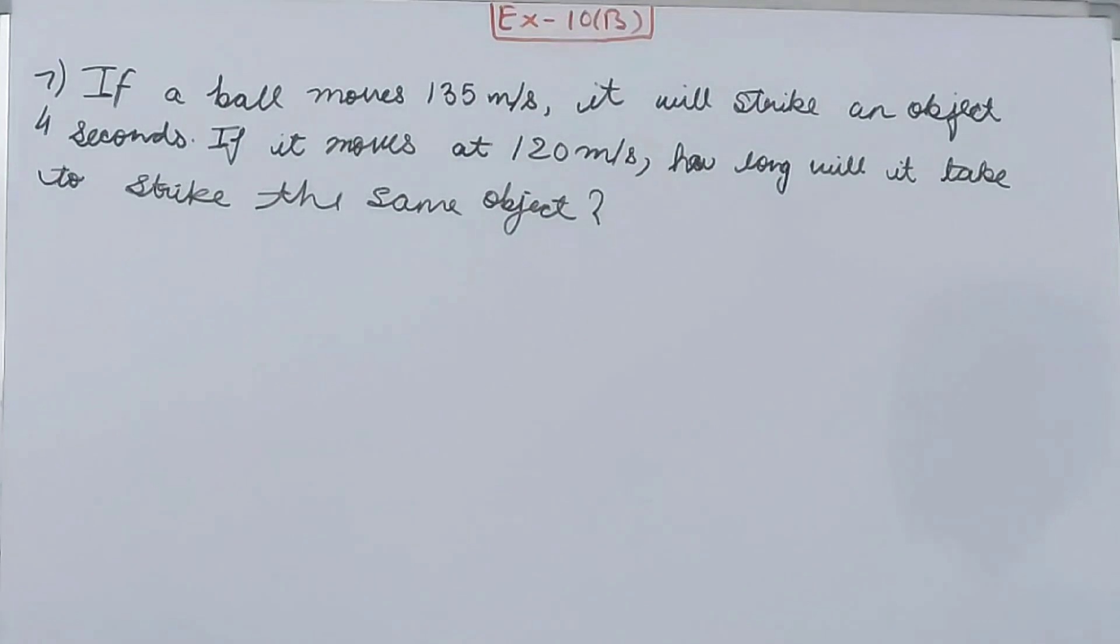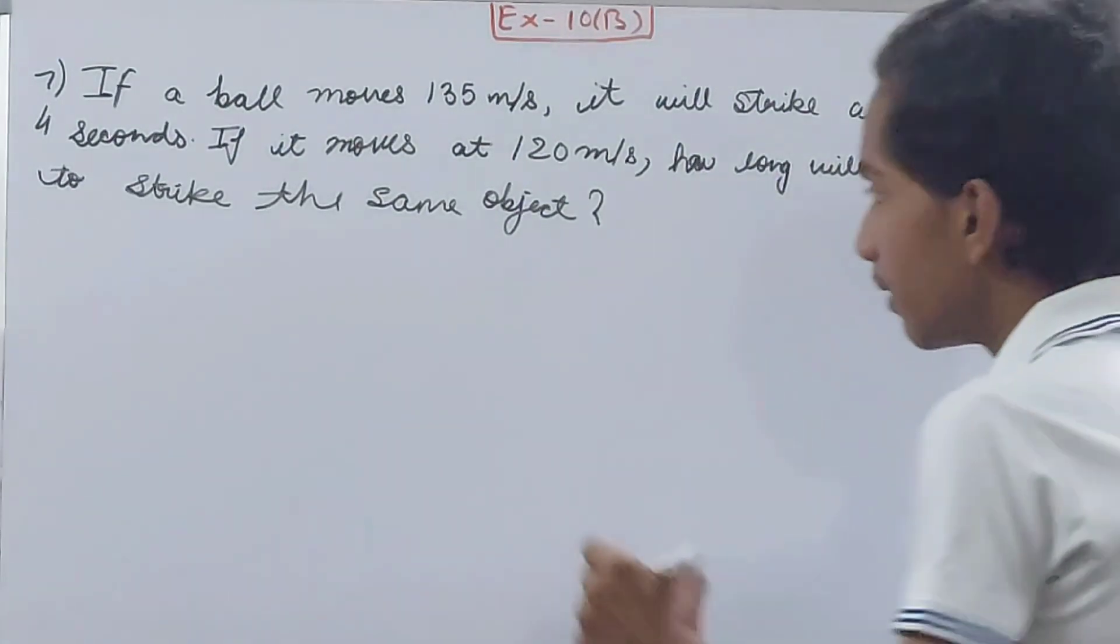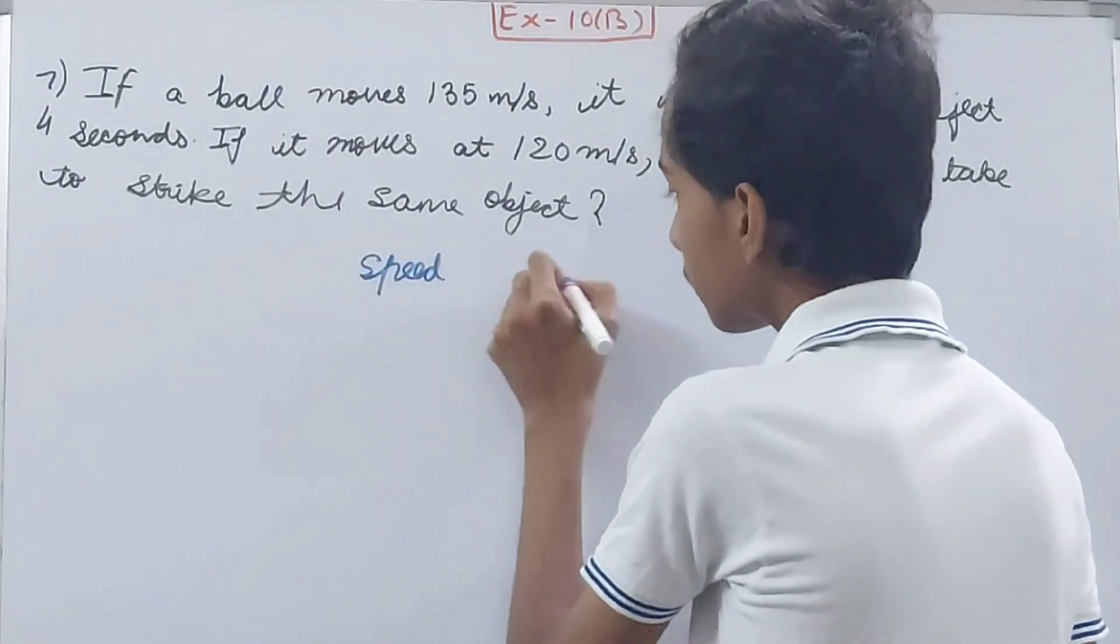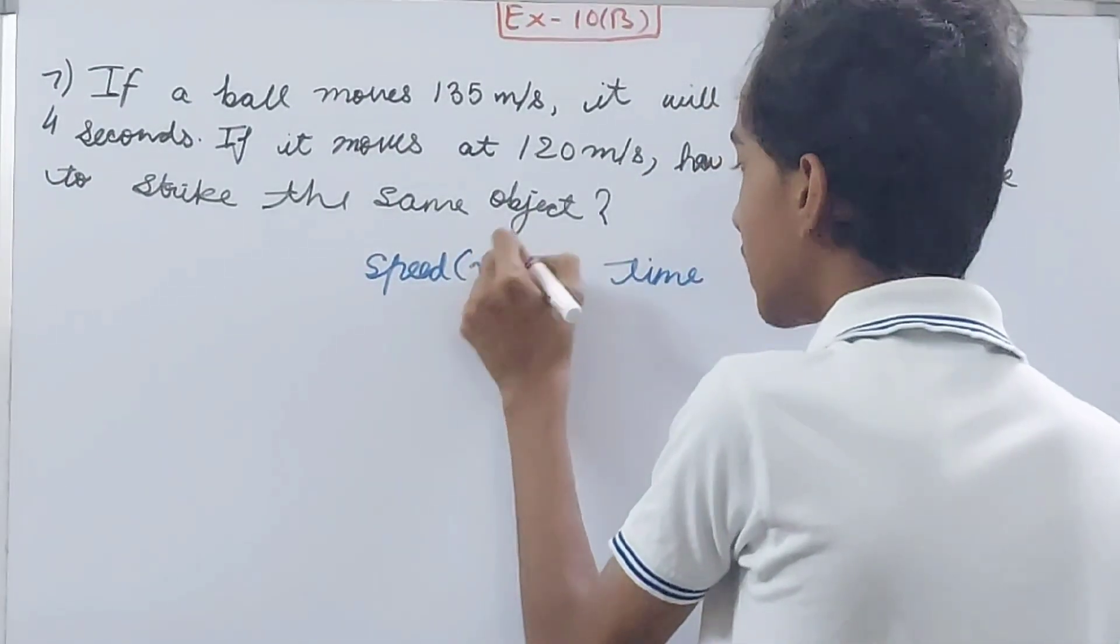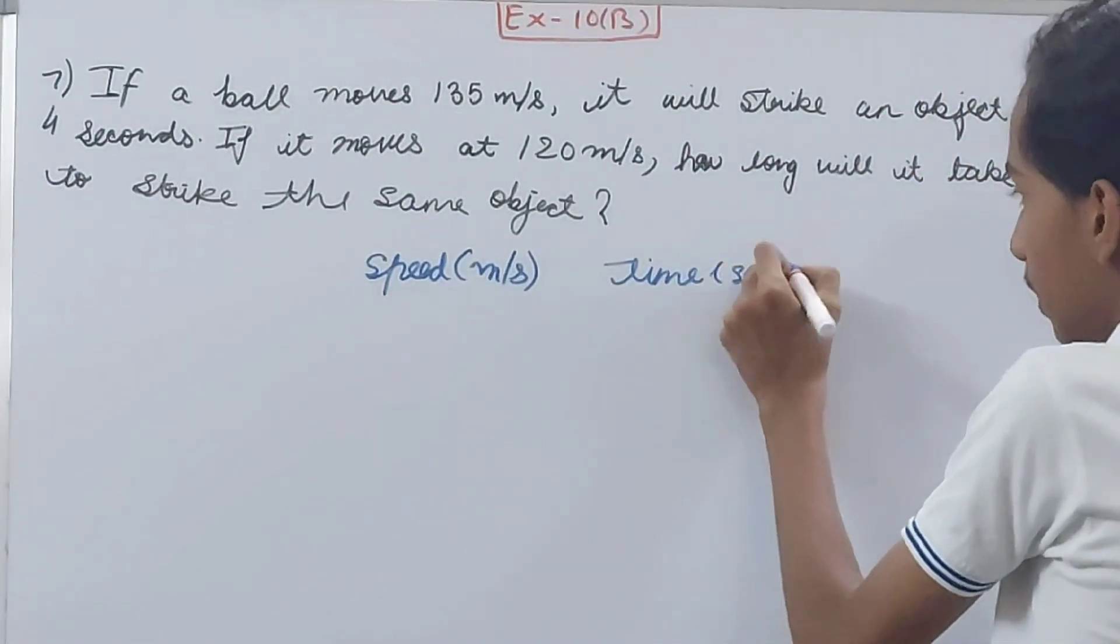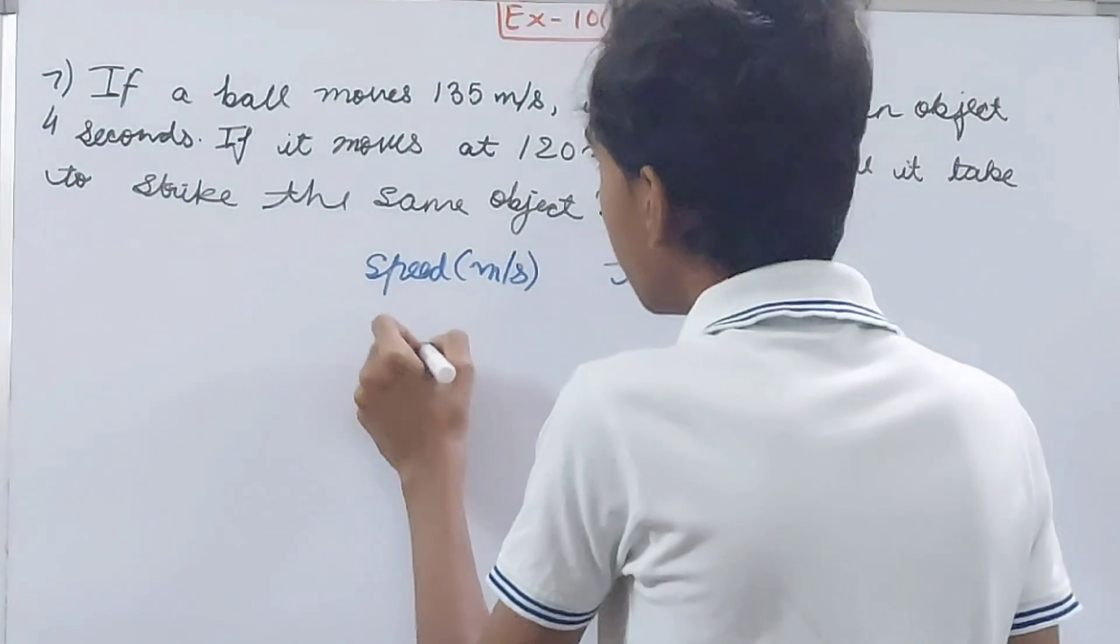So again, two things we have: speed in meters per second and time in seconds. If it is moving at 135, then it will take 4 seconds. If the speed is 120, then x seconds.